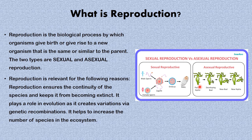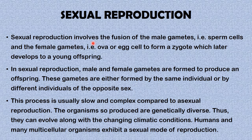Reproduction is relevant for the following reasons: reproduction ensures the continuity of the species and keeps it from becoming extinct; it plays a role in evolution as it creates variations via genetic recombinations; and it helps to increase the number of species in the ecosystem. Moving along, we'll be talking about sexual reproduction.